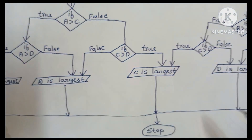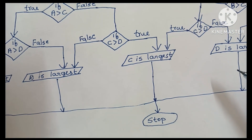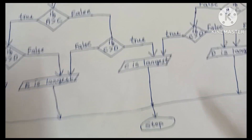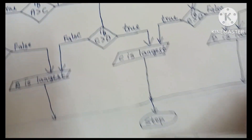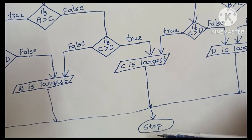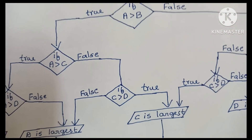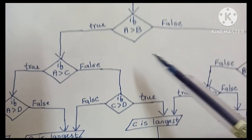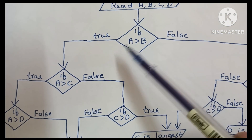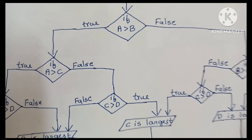Finally, all output values are combined and connected to the stop statement. Output values are written within a parallelogram shape. Start and stop statements are written within an oval shape, and diamond shapes are used for comparisons.